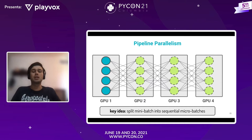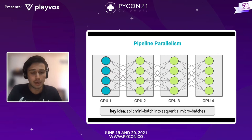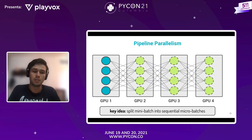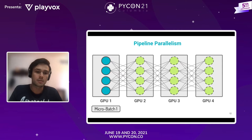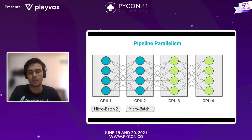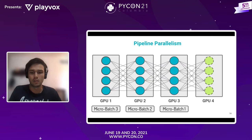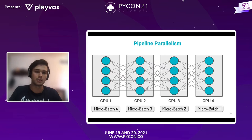Lo que se hace para resolver esto se llama pipeline parallelism. La idea clave es partir el mini-batch de datos; digamos que tengo un batch de 256, lo parto en micro-batches, digamos 4 batches de 64. Entonces la primera GPU va a procesar el primer micro-batch, luego le va a pasar eso a la segunda GPU, y ella va a empezar a procesar el segundo micro-batch, y así sucesivamente hasta que se terminen de procesar todos los micro-batches.